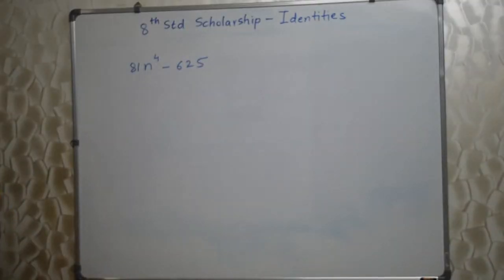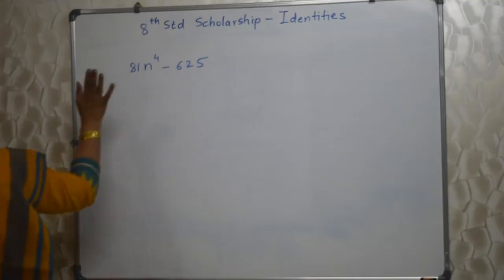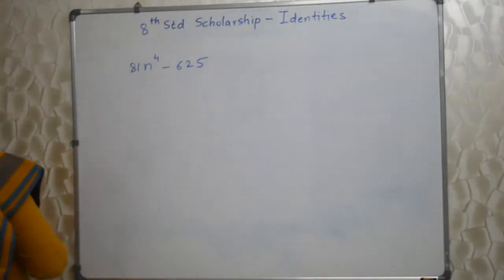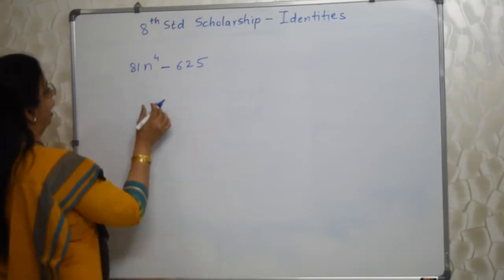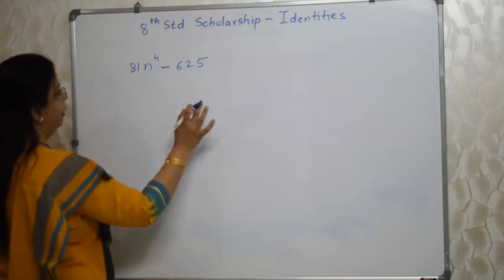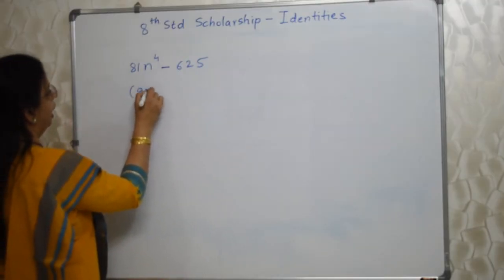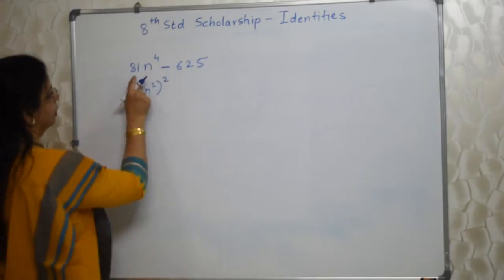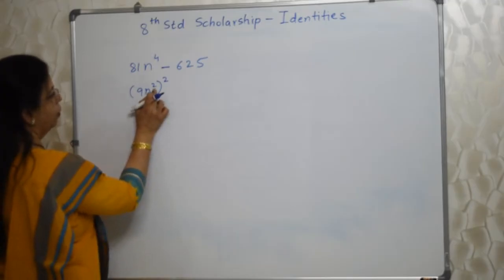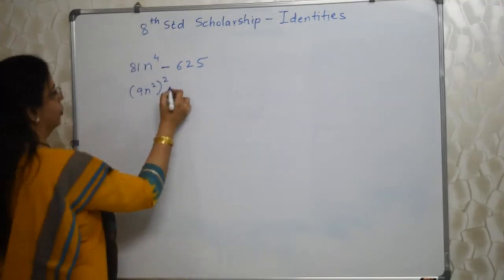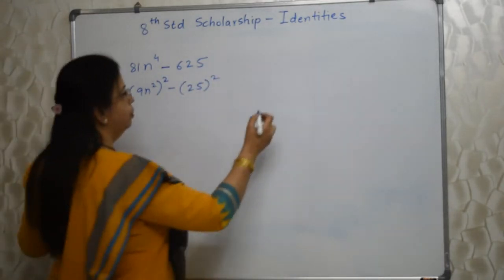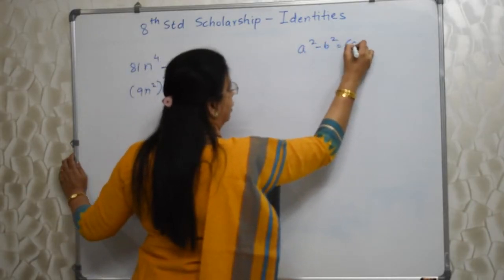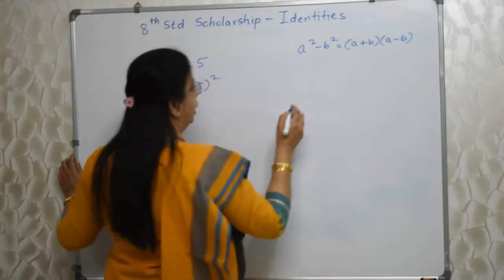The next sum: which of the following are the factors of 81n⁴ − 625? Whenever there is a minus sign, there is scope to find factors. If this and this are each squares of something, we can definitely find factors. 81n⁴ is the square of 9n², and 625 is the square of 25. So we apply the identity a² − b² = (a+b)(a−b).